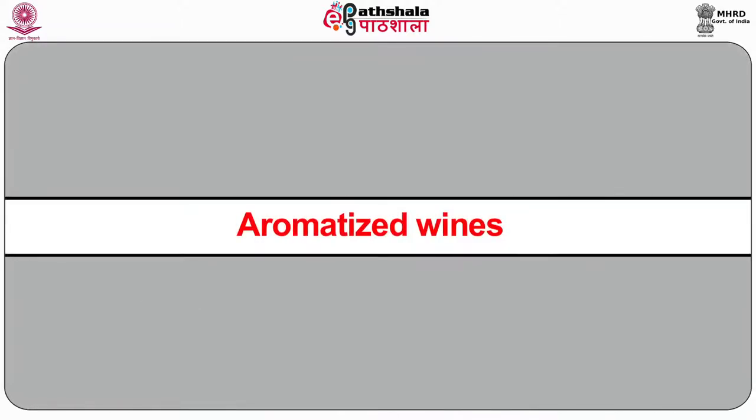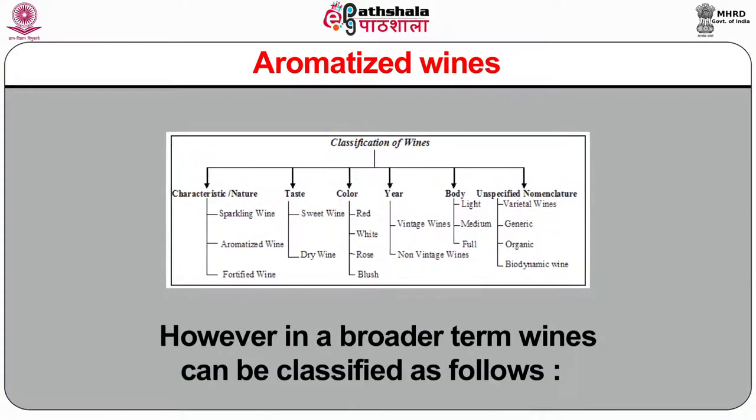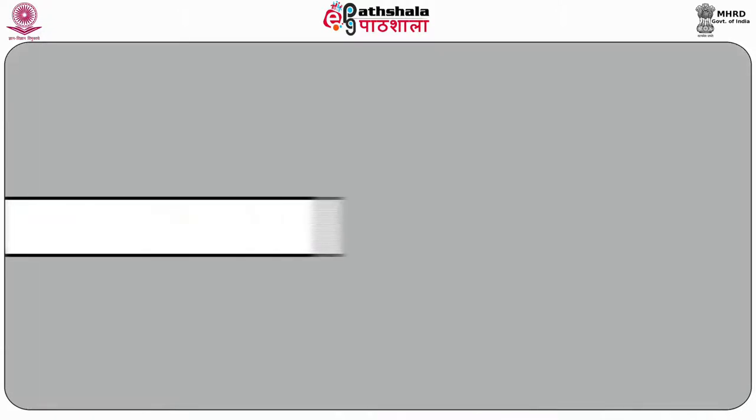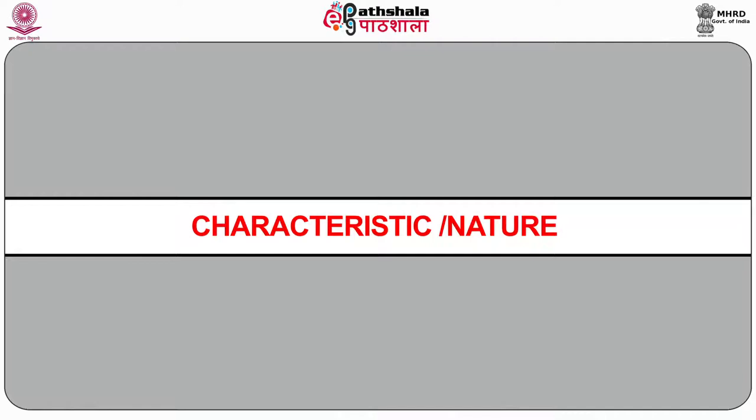Aromatized wines are wines which are fortified and flavored with botanicals such as herbs, fruit peels, food extracts, and cumin. Examples are Vermouth, Dubonnet, and Lillet, which are fortified with herbs, fruit peels and brandy. In a broader term, wines can also be classified on the basis of characteristic and nature.